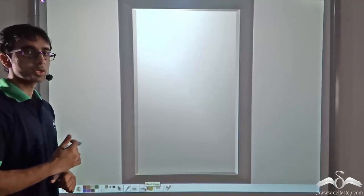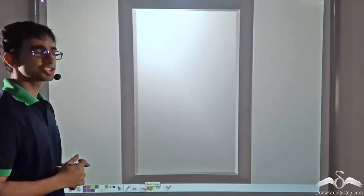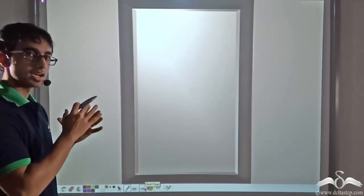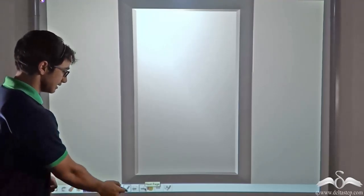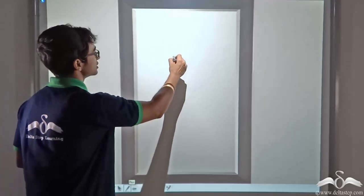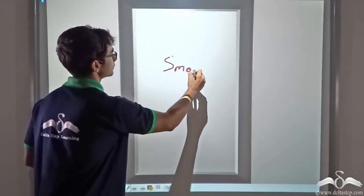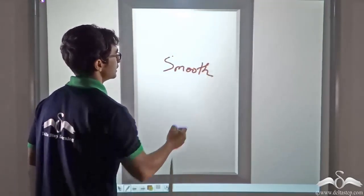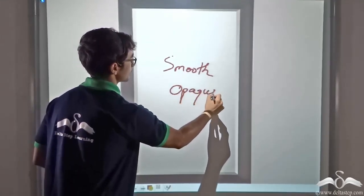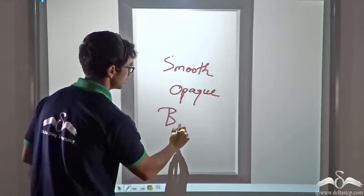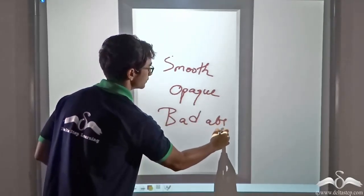So what do you think? Do you think this mirror is satisfying all the properties? Yes. This mirror is smooth. It is opaque. And it is also a bad absorber.